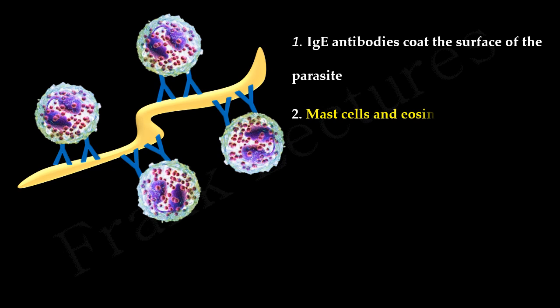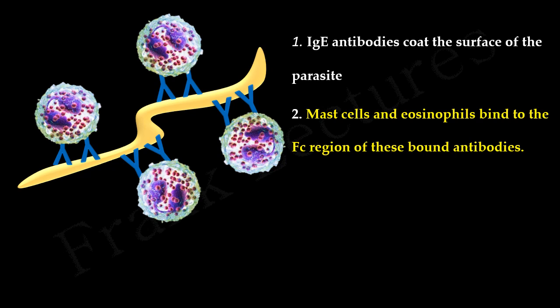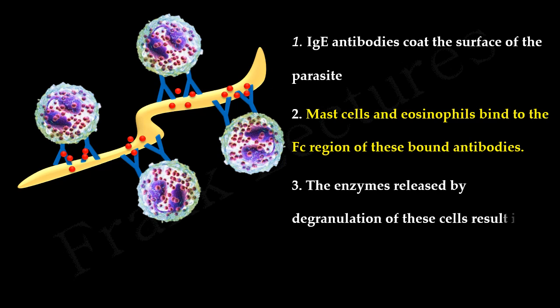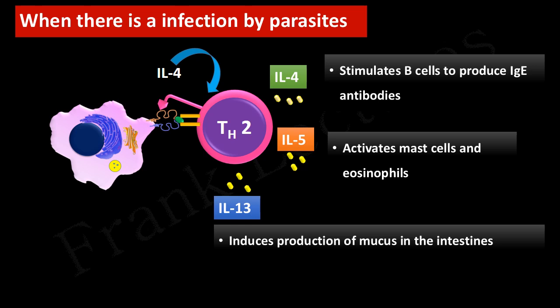The IgE antibodies bind to the surface of parasites, coating the parasite surface. Mast cells and eosinophils have receptors for the Fc region of these antibodies, so they bind to the Fc region of the antibodies bound to the parasite surface. These parasites are killed by granule enzymes secreted by mast cells and eosinophils. The role of mucus secreted is to promote expulsion of parasites from the gut. Differentiation of T helper type 2 cells is stimulated by interleukin-4, and they secrete interleukin-4, -5, and -13. The main role of T helper type 2 cells is to stimulate immunity against parasites, mediated by eosinophils and mast cells.